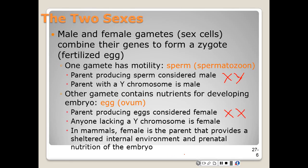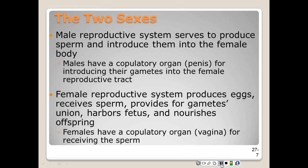In mammals, the female is the parent that provides a sheltered internal environment and prenatal nutrition for the embryo. The male reproductive system serves to produce the sperm and then introduces it into the female body. The male has a copulatory organ called the penis, and it introduces gametes into the female reproductive tract. The female reproductive system produces eggs, receives sperm, provides gametes to be united, and harbors and nourishes the fetus during the proper development stage. The female has a copulatory organ called the vagina, which receives the sperm.